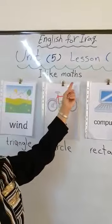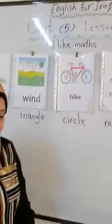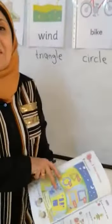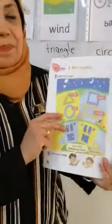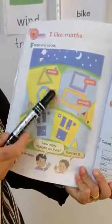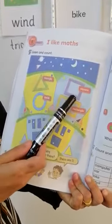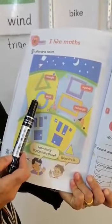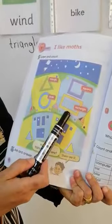I like Maths. Open your books please on page 70. We can see triangle, square, circle and rectangle.